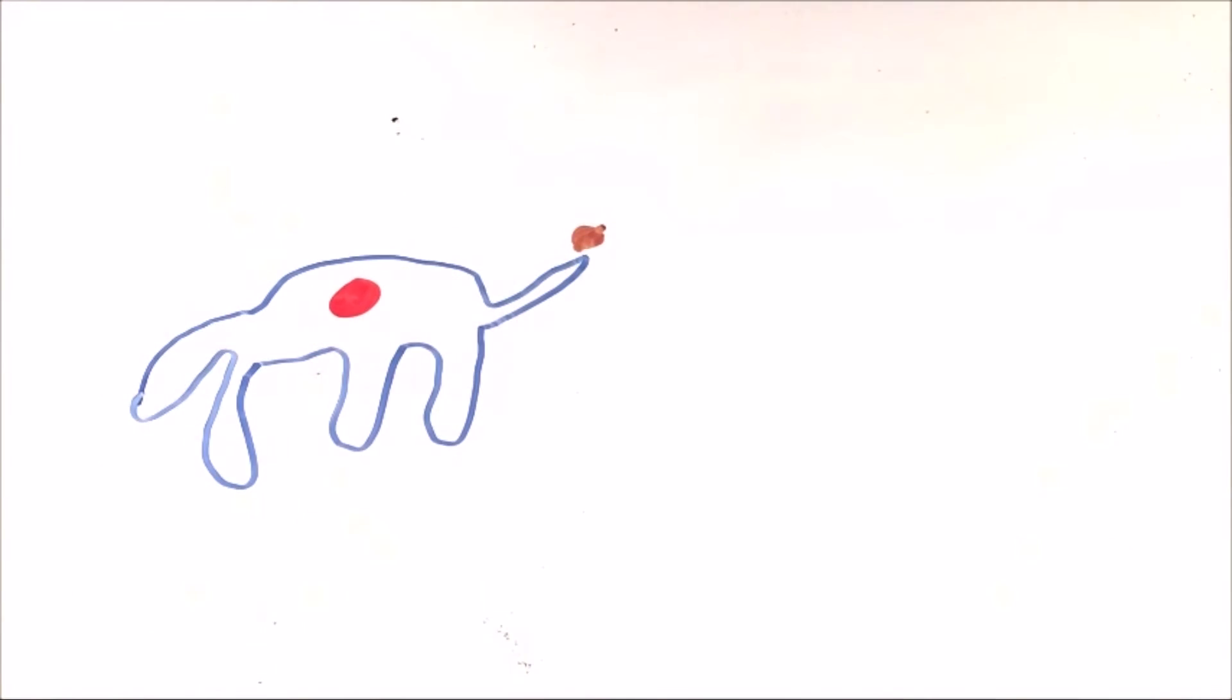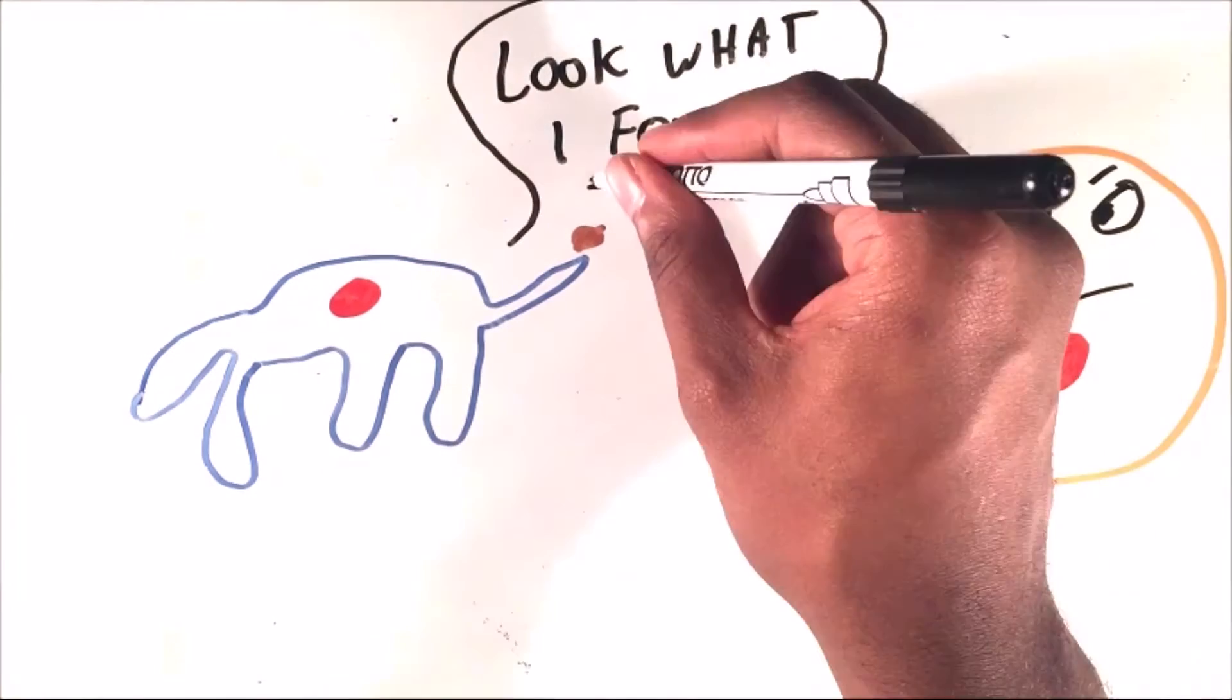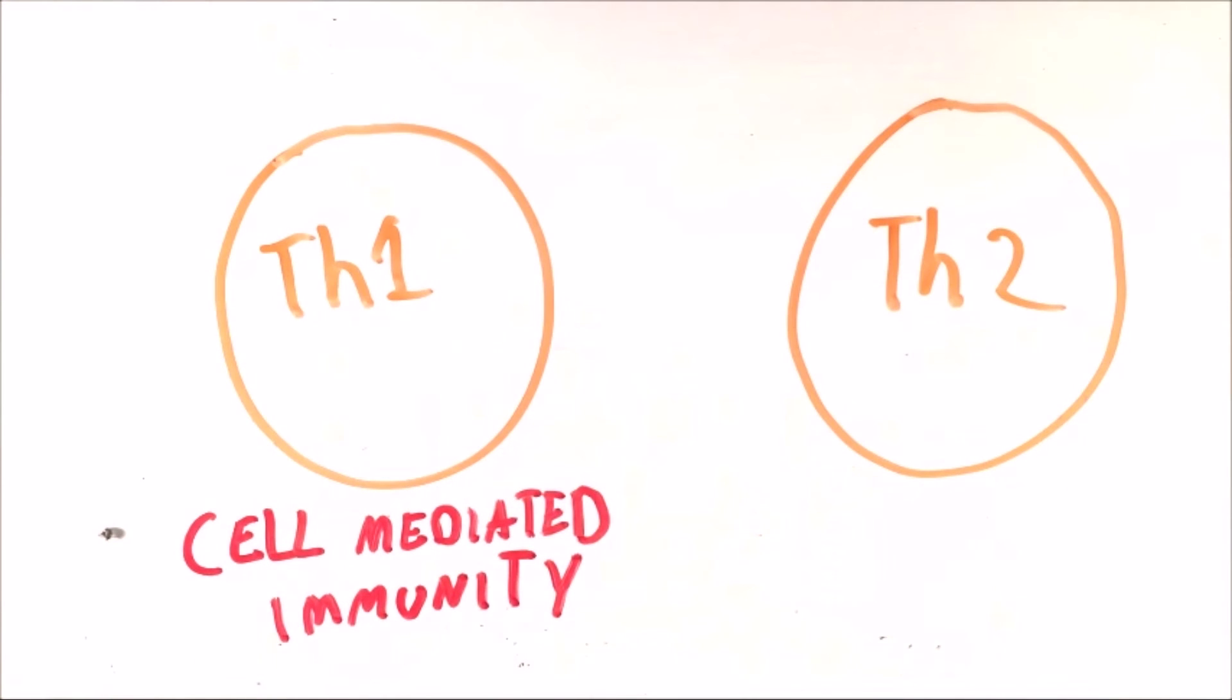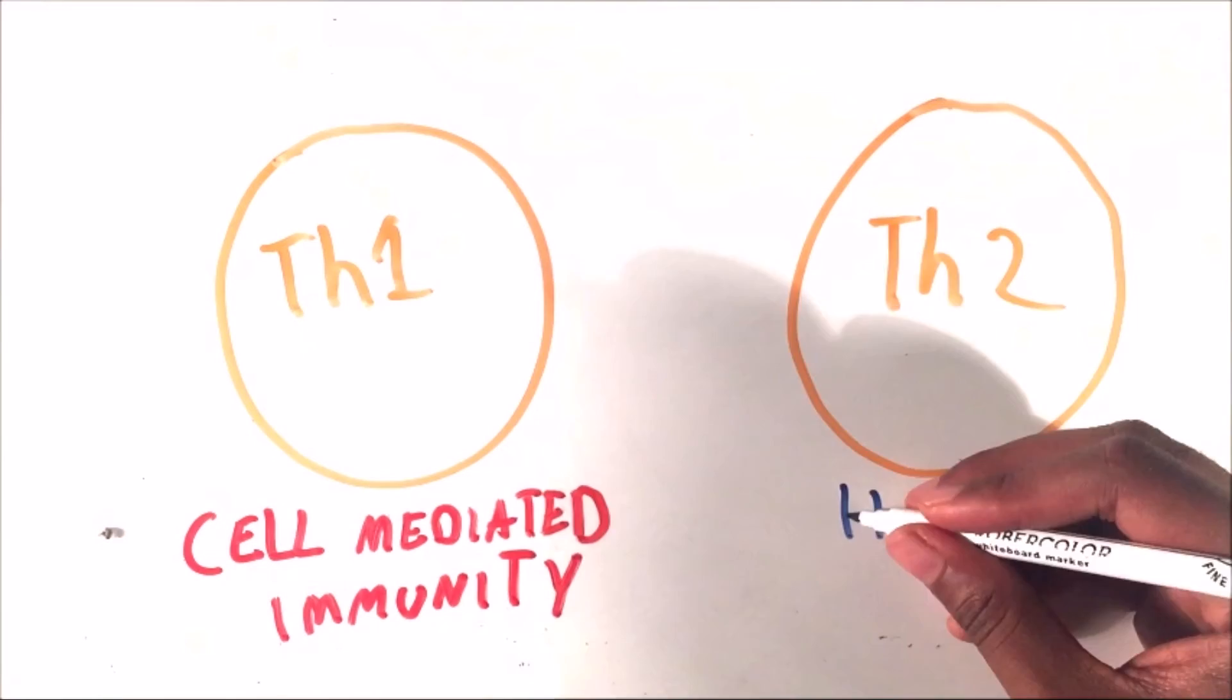One of the dendritic cells functions is to uptake and present allergens to T helper cells. There are two types of T helper cells, type 1 and type 2. Type 1 normally promotes inflammation by the activation of phagocytes, lymphocytes and the release of certain chemicals. This is known as cell mediated immunity. Type 2 promotes inflammation through the production of antibodies. This is known as humoral immunity.